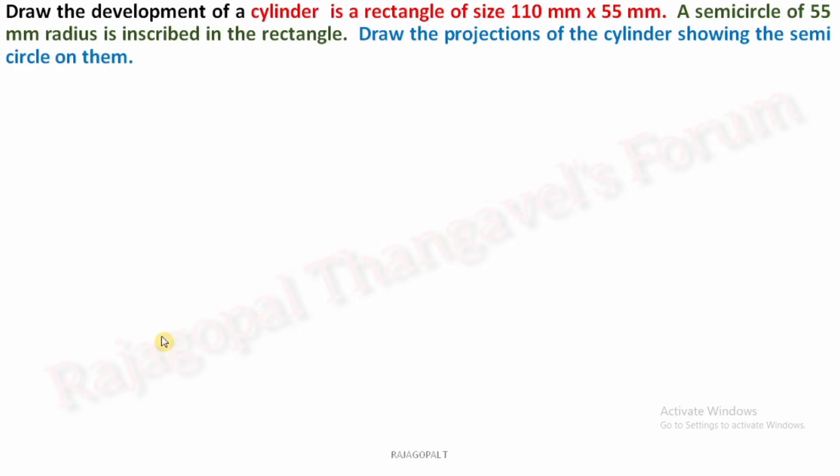What is the difference in this cylinder development is here there is no section plane condition. They said one semicircle is inscribed in the rectangle. We have to draw the projection of the cylinder showing the semicircle. First you have to develop the cylinder, which means you have to develop the surface of a cylinder, then only you can able to complete the projection of the cylinder.